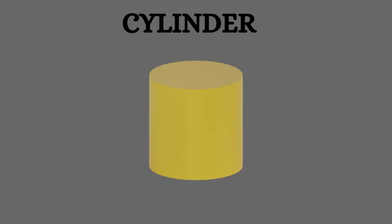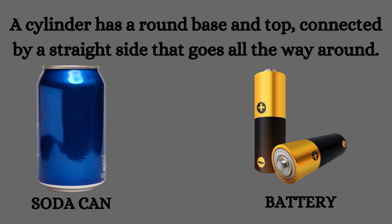Cylinder. A cylinder has a round base and top, connected by a straight side that goes all the way around. Examples include a soda can and battery.